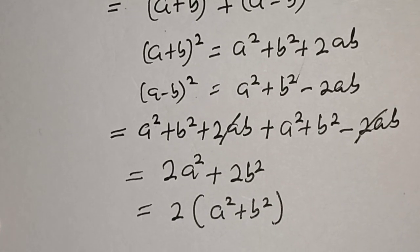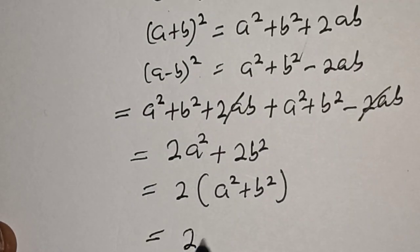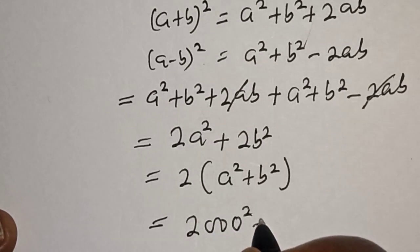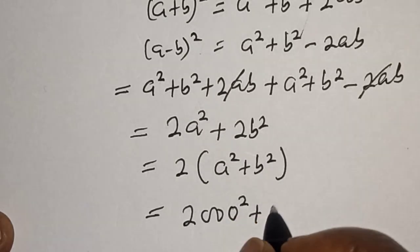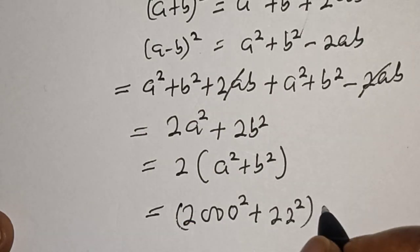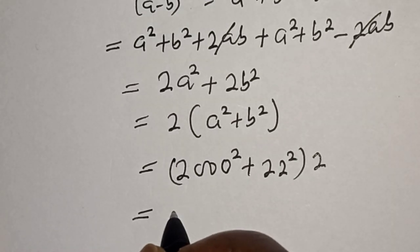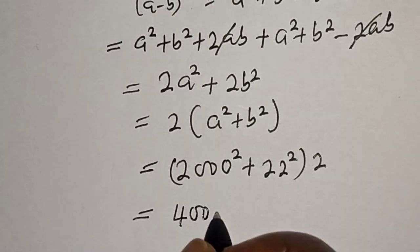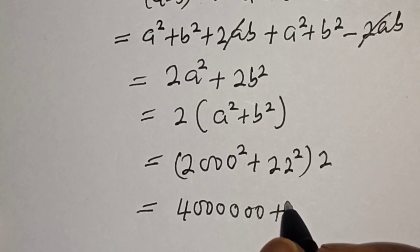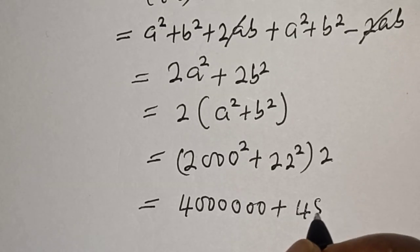We already know what our a is, and this is equal to 2(2000² + 22²). 2000² = 4,000,000 and 22² = 484.